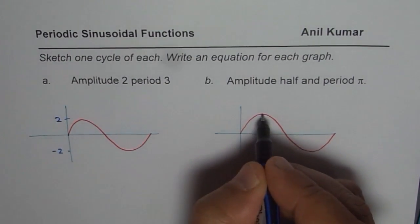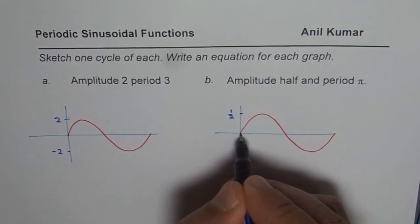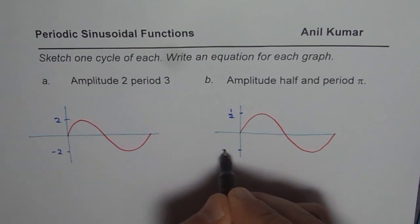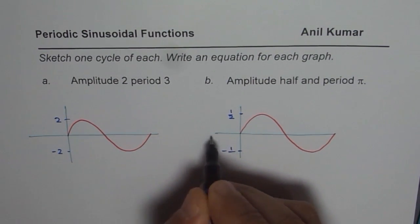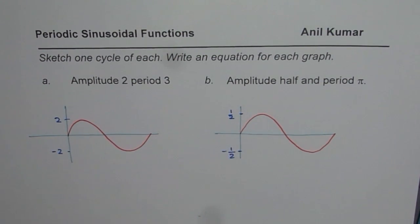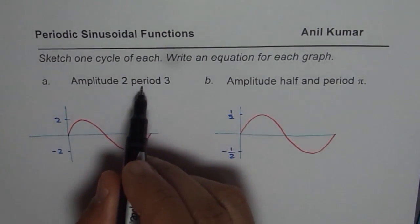In this particular case, amplitude of half means from this axis you go half away, both sides. For a sine function, axis is kind of a symmetry, so both sides' maximum minimum values should be equal distance away from the axis. So that is the first part. Now we have taken care of amplitude in both the cases.